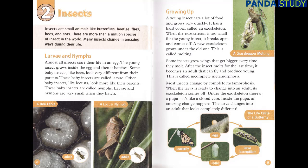Growing up. A young insect eats a lot of food and grows very quickly. It has a hard cover called an exoskeleton. When the exoskeleton is too small for the young insect, it breaks open and comes off. A new exoskeleton grows under the old one. This is called molting. Some insects grow wings that get bigger every time they molt. After the insect molts for the last time, it becomes an adult that can fly and produce young. This is called incomplete metamorphosis.